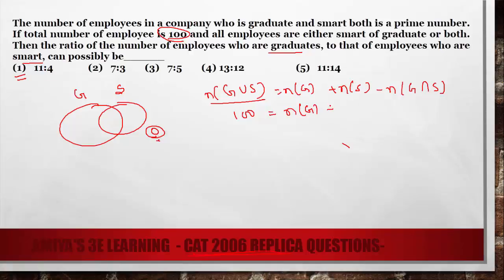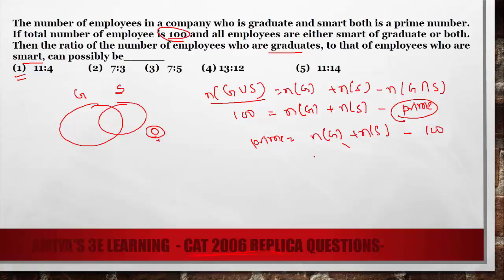Using set theory: number of graduates plus number of smart minus intersection equals 100. The intersection (graduates AND smart) is a prime number. So we can say: number of graduates plus number of smart minus 100 equals a prime number. We have to find which ratio of graduates to smart makes this possible. In terms of option 1, the total ng plus ns is expressed as 15x, since 11 plus 4 equals 15x.